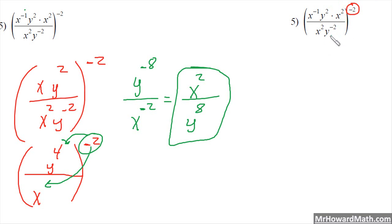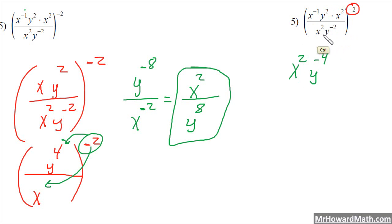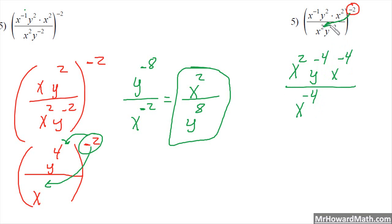Once we do that, we have x to the positive 2 power — because negative 1 times negative 2 gives us positive 2. We have y to the negative 4 power — that's 2 times negative 2. We have x to the negative 4 power — that's the 2 exponent times that negative 2. Then in the denominator, we have x to the negative 4 power — that's negative 2 times positive 2 — and y to the positive 4 power — that's the negative 2 outside times that negative 2 there.